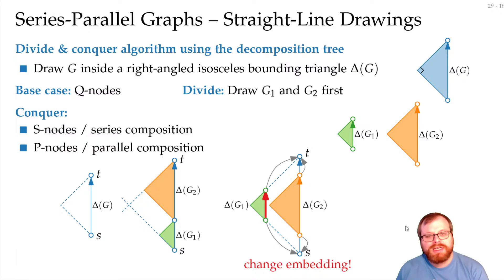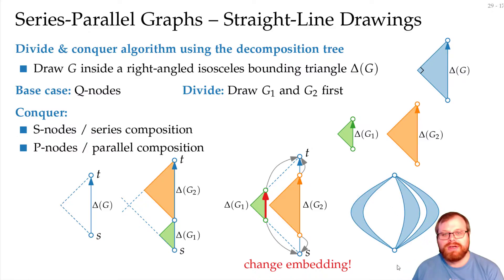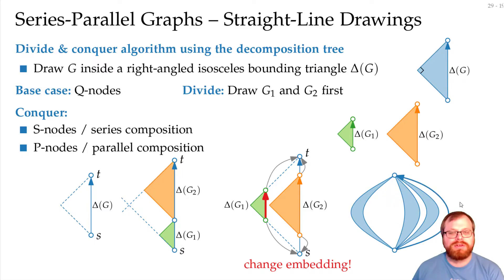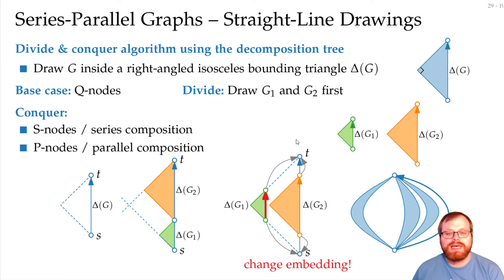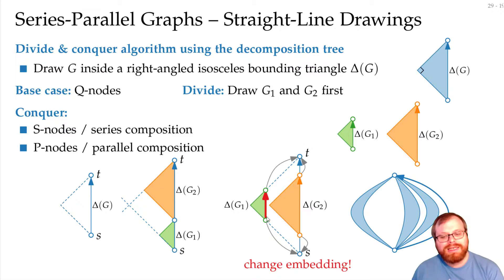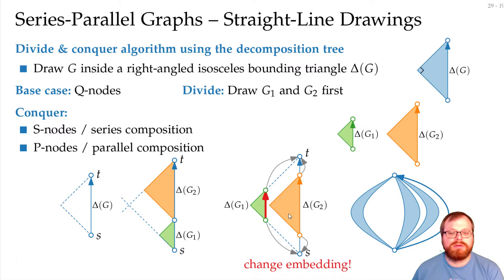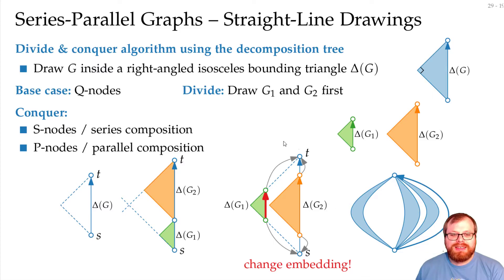For that we can change the embedding. If we have somewhere in a parallel composition a single edge, we move it all the way to the right — so it is the rightmost — and it is not a problem if we have the straight-line edge from s to t. But this alone is not enough to solve all the problems of our parallel composition.